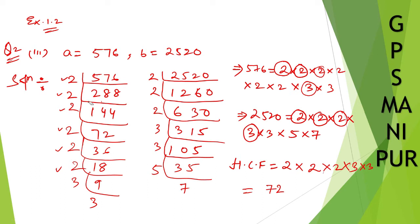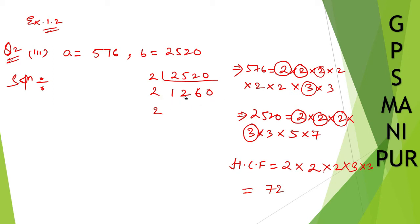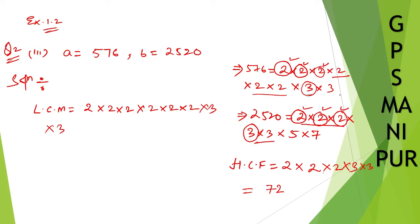Now LCM. Please pause the video and copy this down if you haven't. For LCM, take the common ones — 2 is common, 2 is common, and 2 is common, so all three are gone, and the remaining 2s are copied down: 2 into 2 into 2. Then 3 and 3 are common, write down into 3. Another 3 is also common, write down into 3. What's left — 5 and 7 — so write down into 5 into 7.